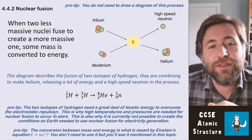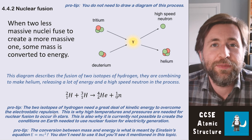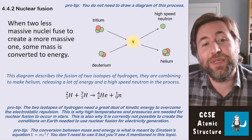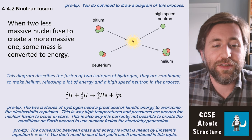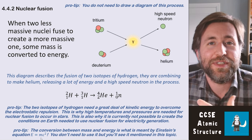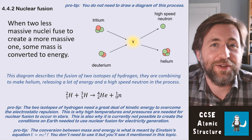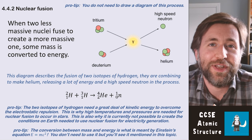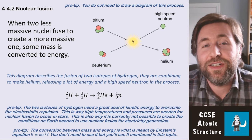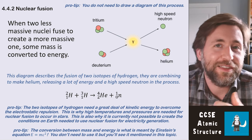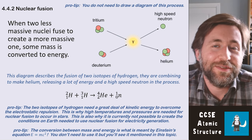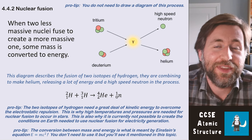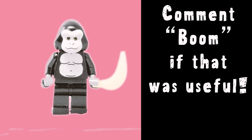In all nuclear reactions, some mass is converted into energy — that's what's meant by Einstein's famous equation E = mc². You don't need to use it, but it's useful to know where it comes from: it's the equation by which we calculate the size of a nuclear store of energy. Mass is not always conserved in nuclear reactions, unlike in chemical reactions. It is turned into energy, and that's why nuclear reactions have such high energies.